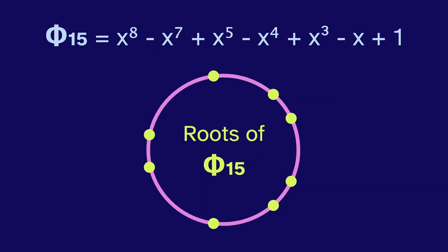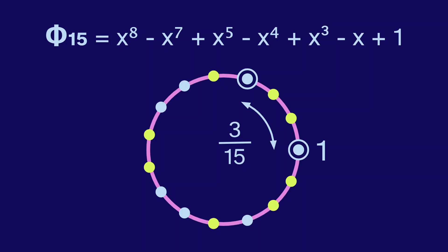I like to think of this using fractions. This point is 3 15ths around the circle from 1. And 3 15ths can be simplified into a 5th. So this point would have appeared in the 5th cyclotomic. But this point is 4 15ths around the circle, which cannot be simplified. So it is a root of the 15th cyclotomic.